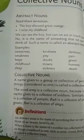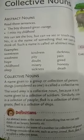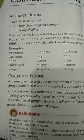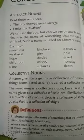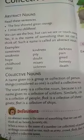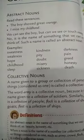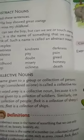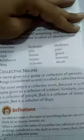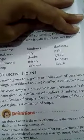Collective noun. A name given to a group or collection of persons or things considered as one is called a collective noun. The word army is a collective noun because it is the name given to the collection of soldiers — a group of soldiers is called an army. Similarly, crowd is a collection of people — a group of people is called a crowd.